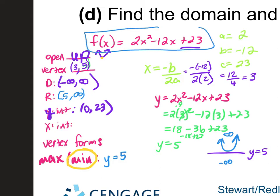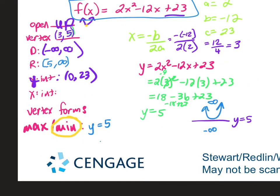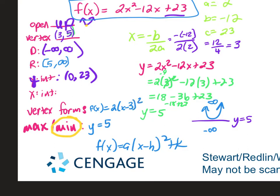Now let's go to vertex form. Vertex form is f(x) = a(x - h)² + k. My a term is 2, h is 3, and k is 5. So vertex form is f(x) = 2(x - 3)² + 5. If you squared (x - 3), multiplied by 2, then added 5, you'd end up with 2x² - 12x + 23.